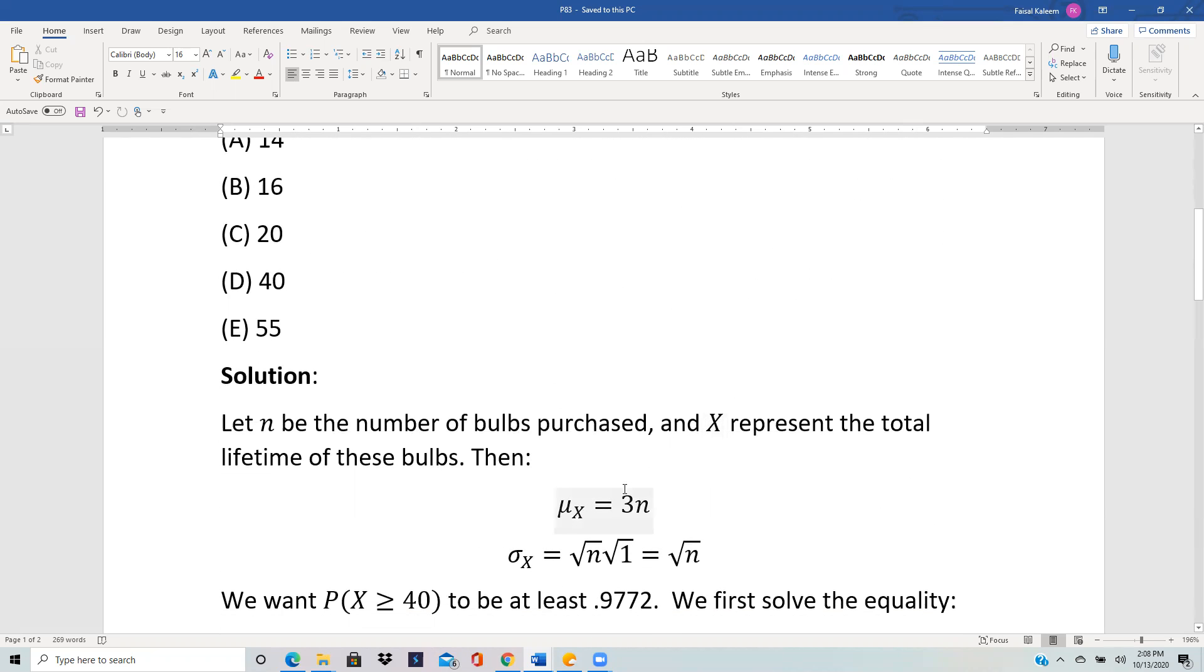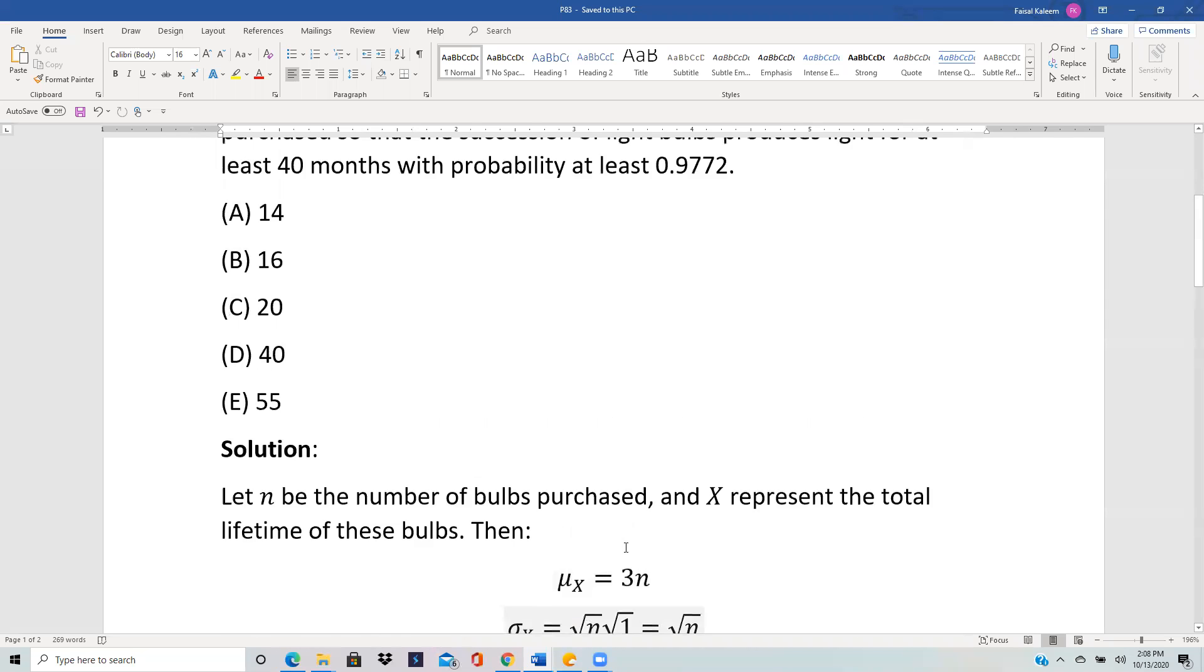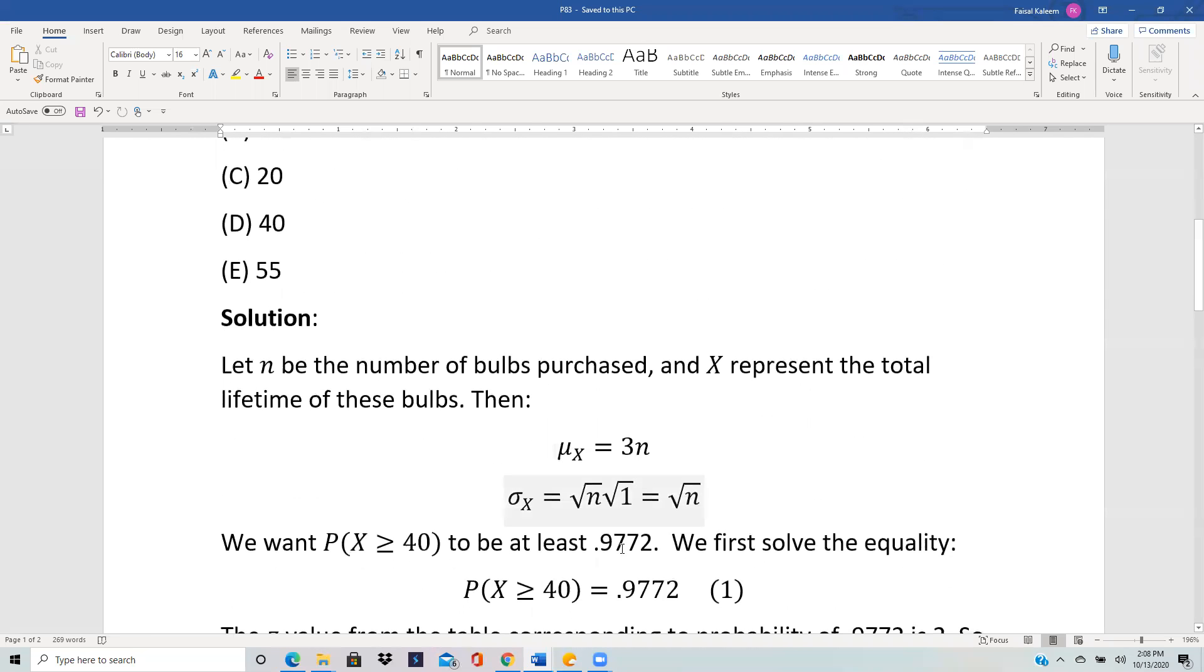And the standard deviation is √n times the standard deviation of each of them. Each has a standard deviation of square root of the variance. Variance was 1, so we get √n for the standard deviation. So we want P(X ≥ 40) to be at least 0.9772, which means greater than or equal to 0.9772.